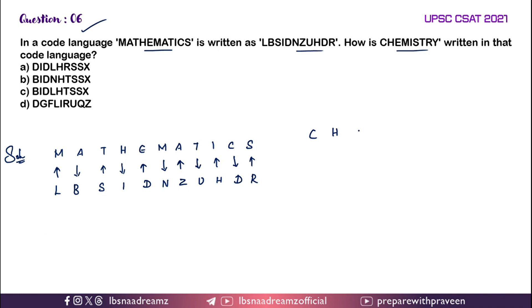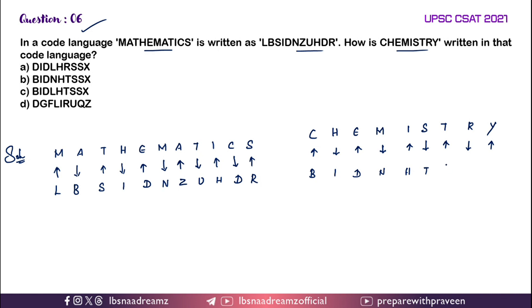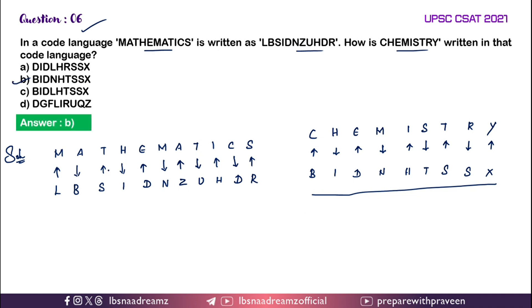For CHEMISTRY, the code we have got is B, I, D, N, H, T, S, S, X — BIDNHTSS. Option B is the right answer. This last question was asked in 2023.